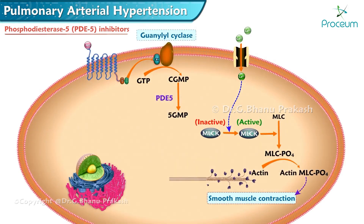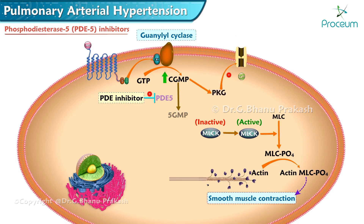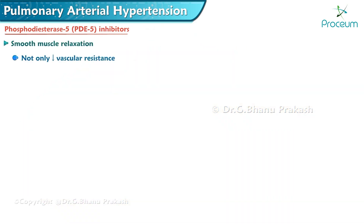Phosphodiesterase 5 enzyme metabolizes cyclic guanosine monophosphate in the smooth muscles of blood vessels. Inhibitors of phosphodiesterase 5 antagonize this action via the nitric oxide–cyclic guanosine monophosphate pathway, causing an increase in cyclic guanosine monophosphate levels and vasodilation. Nitric oxide release also increases cyclic guanosine monophosphate levels, promoting dephosphorylation of myosin light chain kinase.